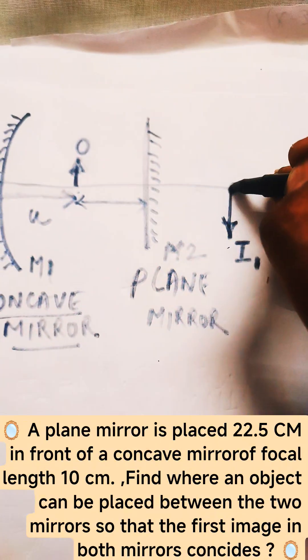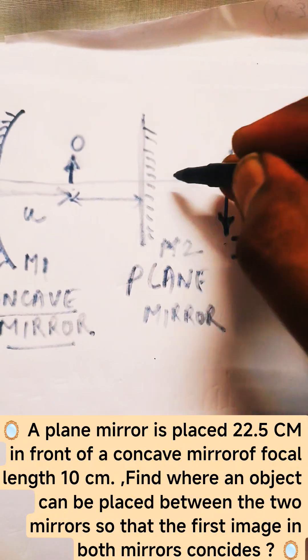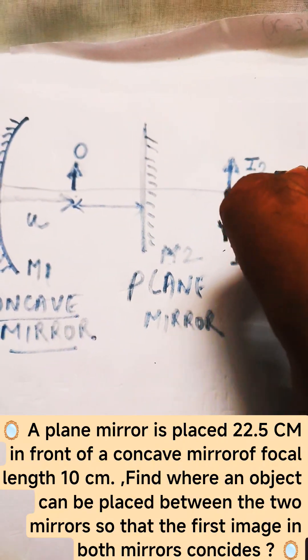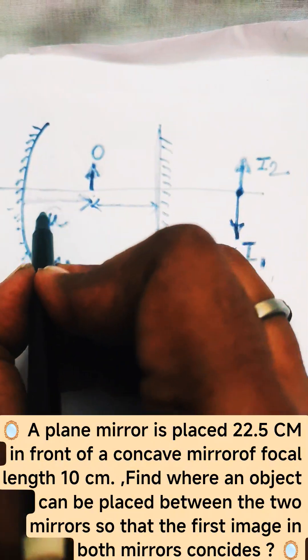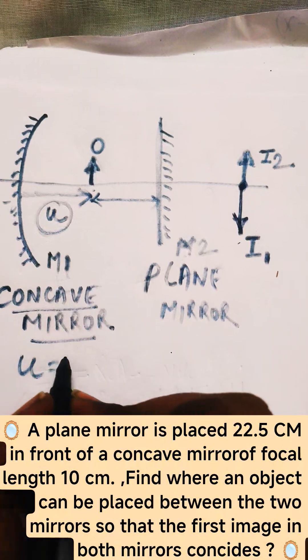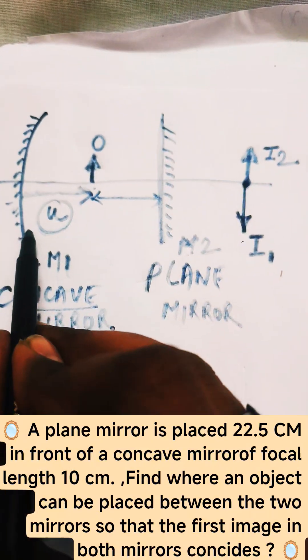This is the object, and the image forming at this point by this mirror M2 is I2, right. We need to find at what distance, we need to find the value of u so that the image formed by this concave mirror